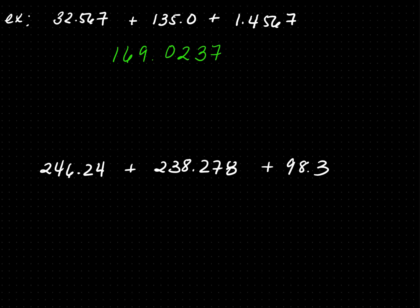Next, I'm going to go back to the original numbers and find the last significant digit in each. For 32.567, the last significant digit is the 7. For 135.0, the last significant digit is the 0 — it's significant because there's a decimal present and a significant digit in front. For 1.4567, the last significant digit is 7. The 7 in 32.567 is in the thousandths place. The 0 is in the tenths place. And the 7 in 1.4567 is in the ten-thousandths place.